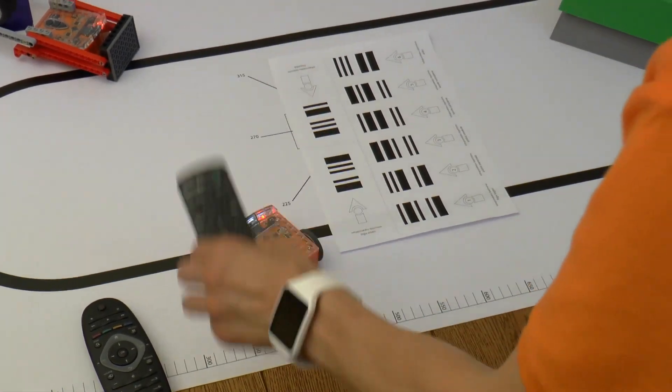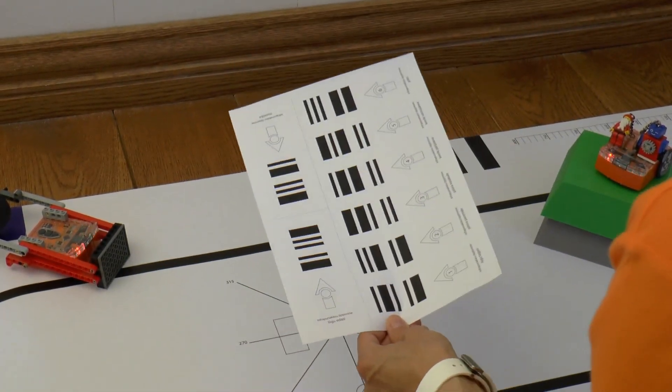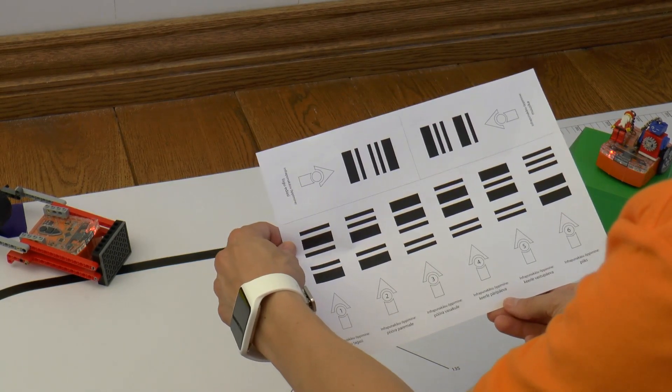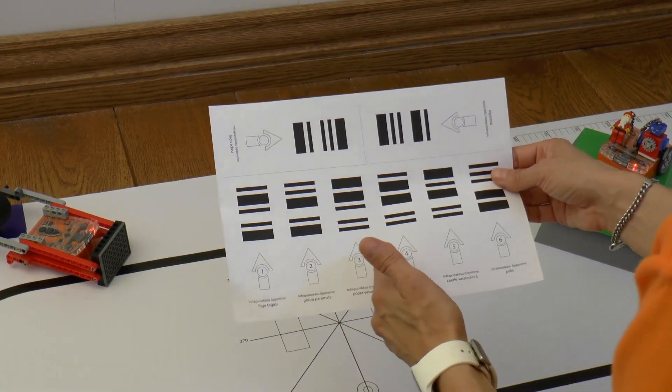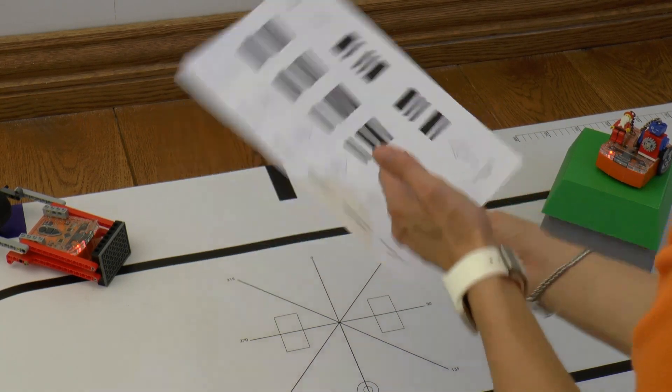You can bind 8 different Edison actions to the remote: drive forward, drive backward, turn right, turn left, spin clockwise, spin anti-clockwise, play a beep, and play music.